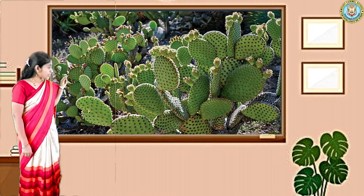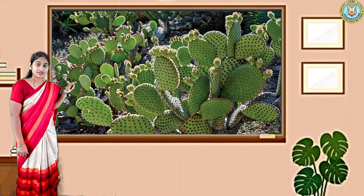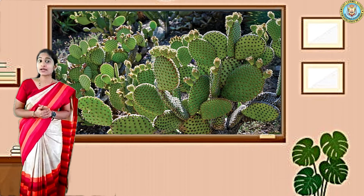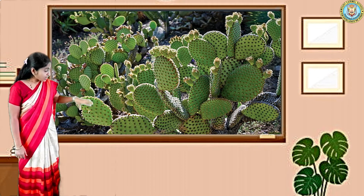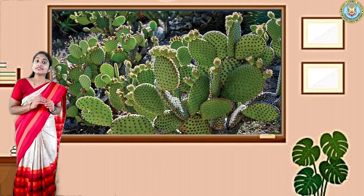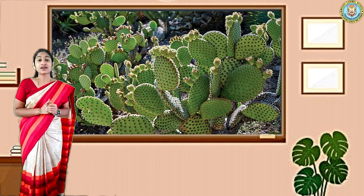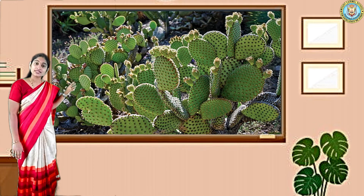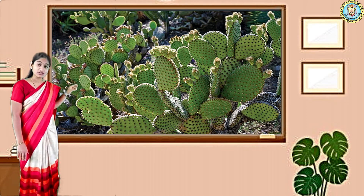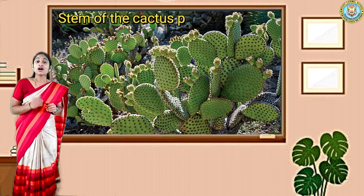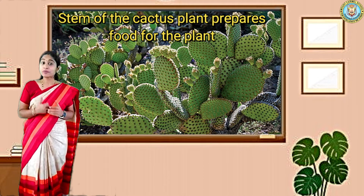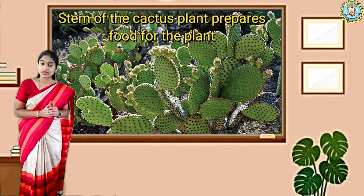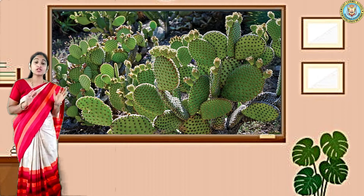Let us learn about this plant. You can see this is a cactus plant. How does it prepare food for the entire plant? These parts are nothing but the stem — they are not leaves, they are stem. And the cactus prepares food through this stem. The bulky portion we can see here is the stem of the cactus plant, and it prepares food for the entire plant. This is one of the unusual plants.